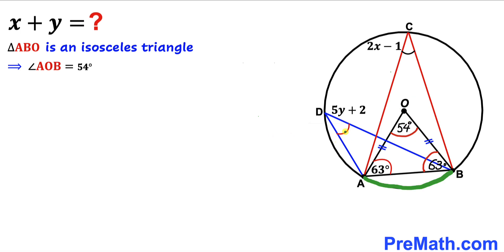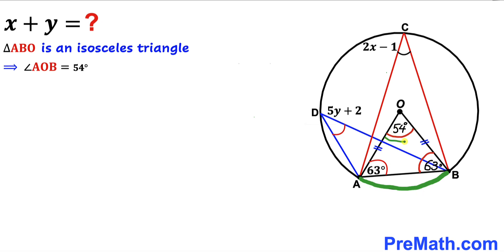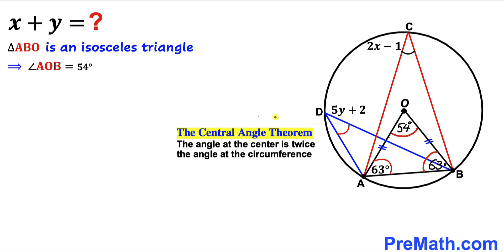Now let's make an observation. We can see that angle ADB, angle ACB, and angle AOB are all subtended by the same arc AB. Angle AOB is at the center, whereas angles ADB and ACB are at the circumference. Recalling the central angle theorem: the angle at the center is twice the angle at the circumference. So angle AOB equals two times angle ACB.